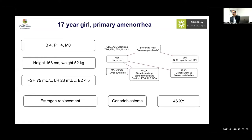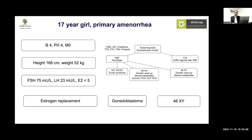We have said that even if a child looks entirely like Turner syndrome, karyotype is still important because there may be a Y cell line. But if somebody is tall, you need to be very cautious in terms of assessment. The theme today is primary amenorrhea due to hypergonadotropic hypogonadism in tall individuals.